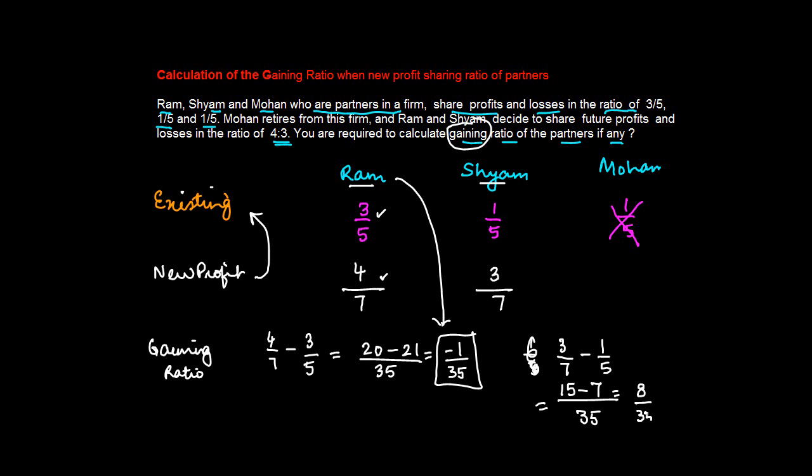So actually Sham is gaining and Ram is losing. So effectively there is no gaining ratio, whereas Sham has made a gain of 8/35. So effectively the ratio is minus 1:8, which means Ram did not make any gain whereas Sham gained 8/35.